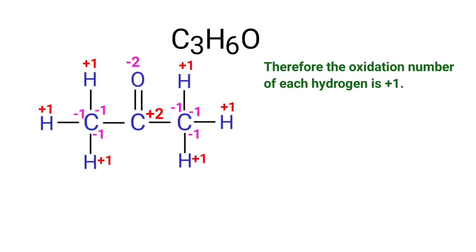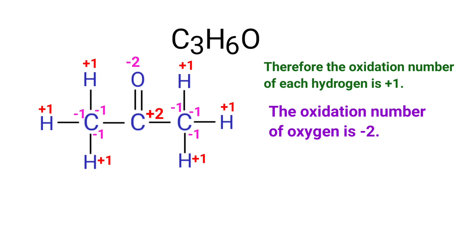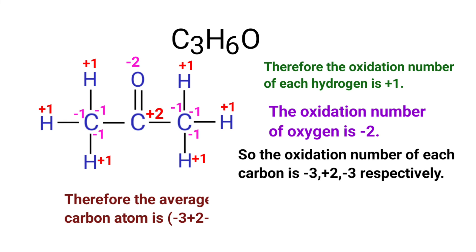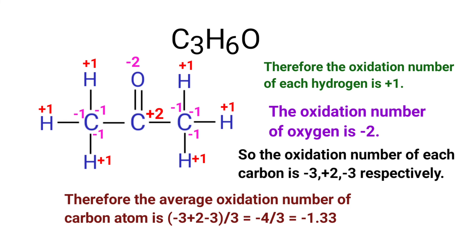Therefore, the oxidation number of each hydrogen is plus one. The oxidation number of oxygen is minus two. So, the oxidation number of each carbon is minus three, plus two, and minus three respectively. Therefore, the average oxidation number of carbon atom is (minus three plus two minus three) divided by three, which equals minus four by three, or minus one point three three.